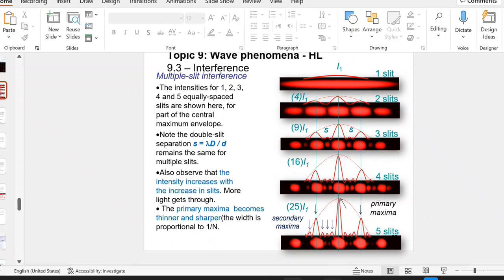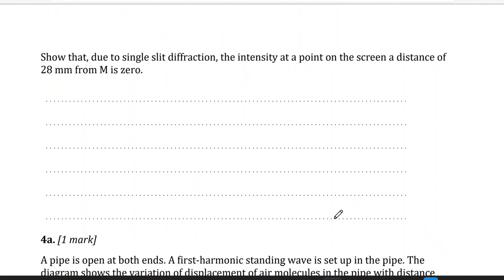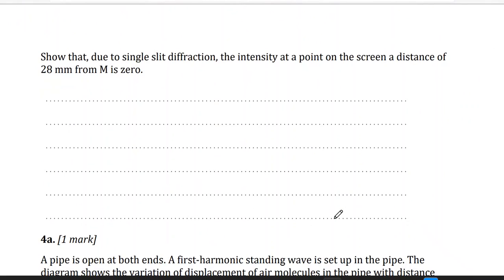Now, part D: show that due to single slit diffraction, the intensity at a point on the screen at distance 28 millimeter from M, from the central maximum, is zero. Now I'm going to use the same equation, the diffraction equation. Sine theta, if theta is really small, so we can use theta equals lambda over d. This is sine theta or tan theta. If the angle is small, tan will equal the angle, so theta will equal s over D.